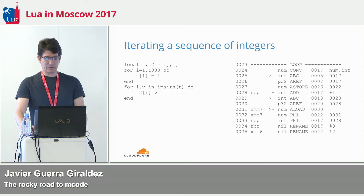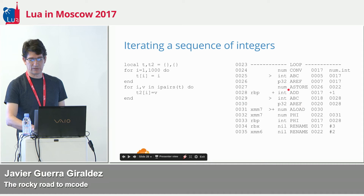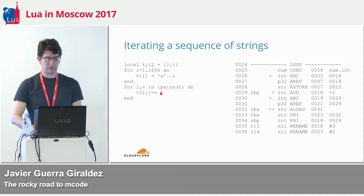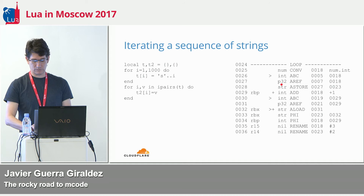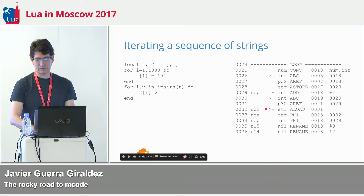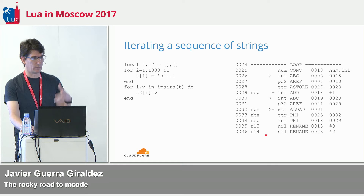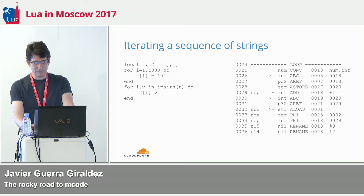For example, in this very simple code we fill a table with a sequence of integers and iterate on them. In the loop, we see that the store and load declare that there are numbers. If we change to storing strings in the table, the loop is the same in Lua, but the generated code is almost the same — the only difference is that the store and load now declare that they are strings. These carets mean these instructions are guarding on the type. If when it does a load it doesn't find a string, it will just fail and go back to the interpreter or to another trace if one is available.